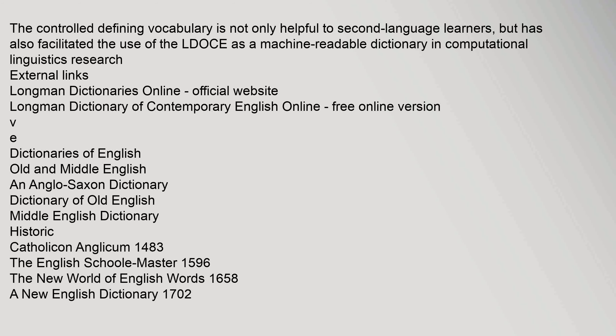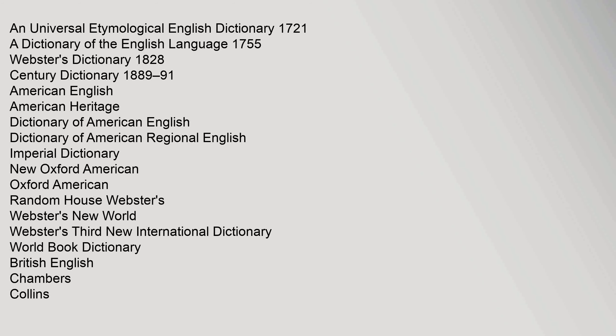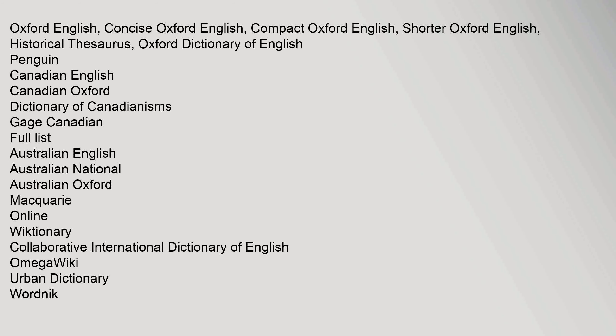Other English dictionaries include Old and Middle English and Anglo-Saxon dictionaries, and historical works such as the Catholicon Anglicum 1483, The English School Master 1596, The New World of English Words 1658, A New English Dictionary 1702, An Universal Etymological English Dictionary 1721, A Dictionary of the English Language 1755, Webster's Dictionary 1828, Century Dictionary 1889–91. American English dictionaries include the American Heritage Dictionary, Dictionary of American English, Dictionary of American Regional English, Imperial Dictionary, New Oxford American, Oxford American, Random House Webster's, Webster's New World, Webster's Third New International Dictionary, and World Book Dictionary. British English dictionaries include Chambers, Collins, and Oxford English.